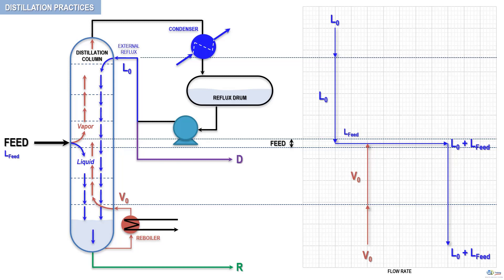Once the rising vapor reaches the feed stage, the vapor flow rate will increase by an amount equal to the vapor flow rate introduced to the column. We'll call this amount V_feed. Basically, at the feed stage level, the vapor flow inside the distilling column increases from V0 to V0 plus V_feed. From there, the vapors continue to flow upward at almost a constant flow rate to the top of the column, as depicted here.